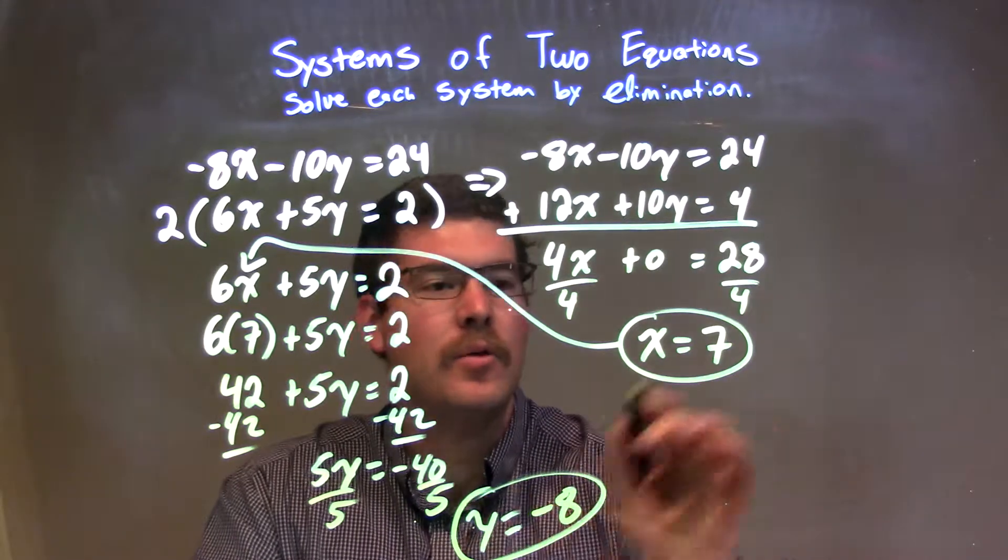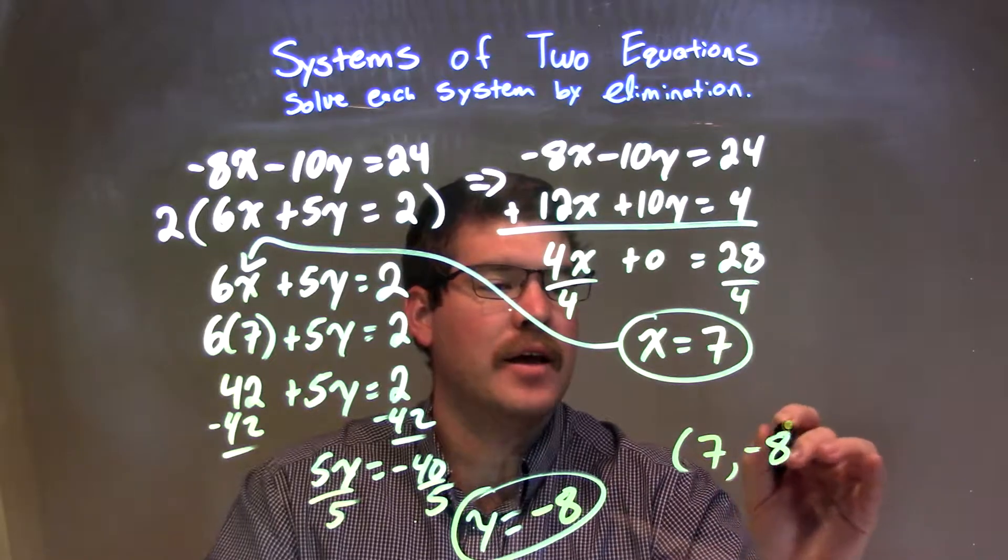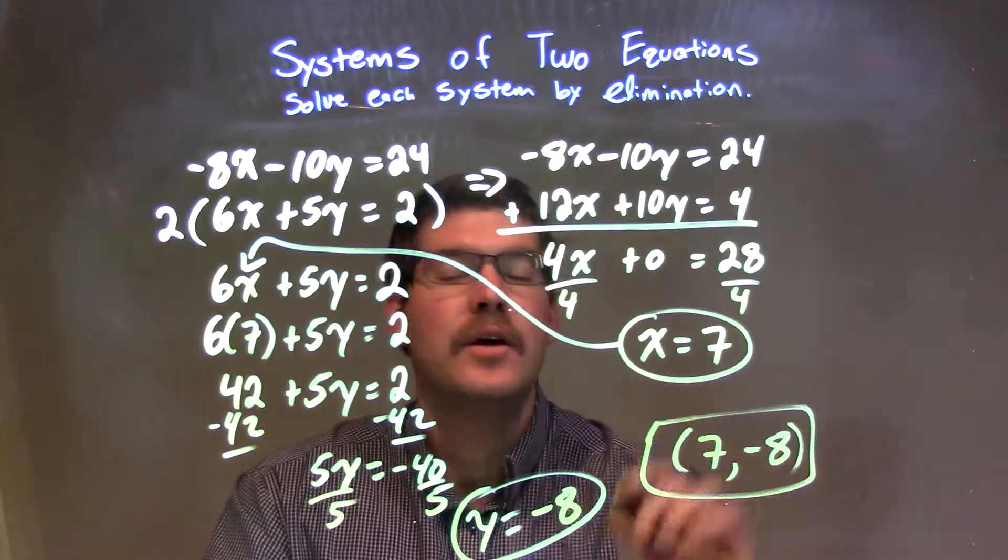And there we have it. We have our y value, we have our x value. Together they can make a coordinate point, which is (7, -8). And there we go, our final answer.